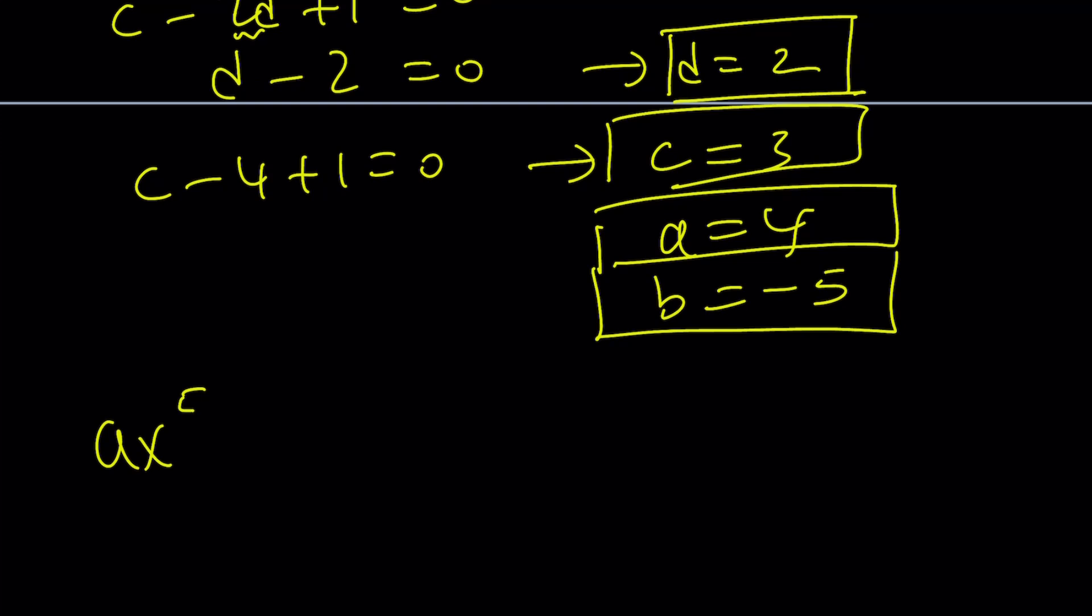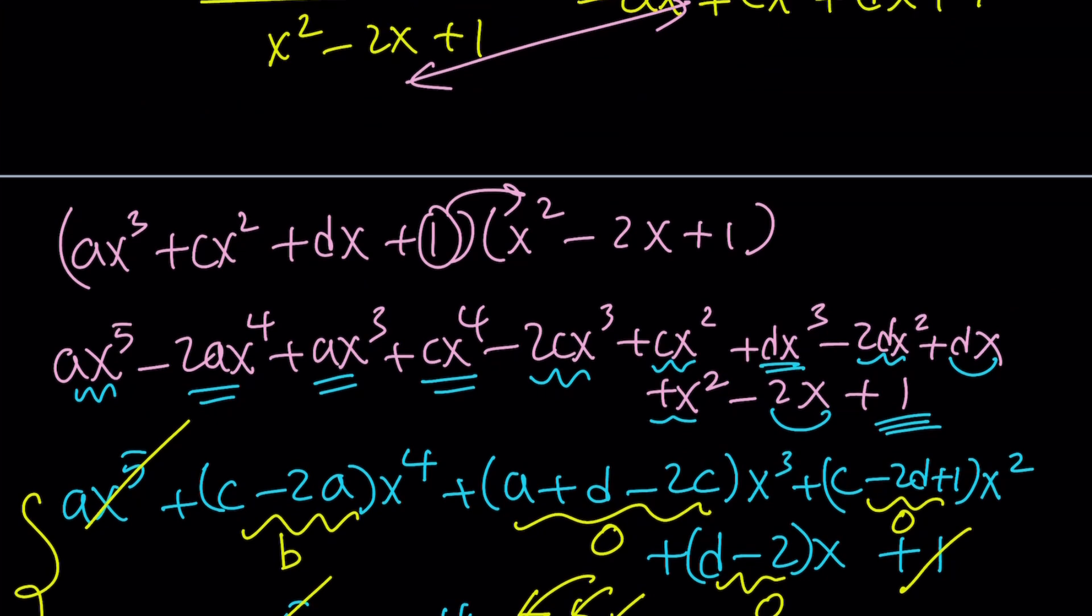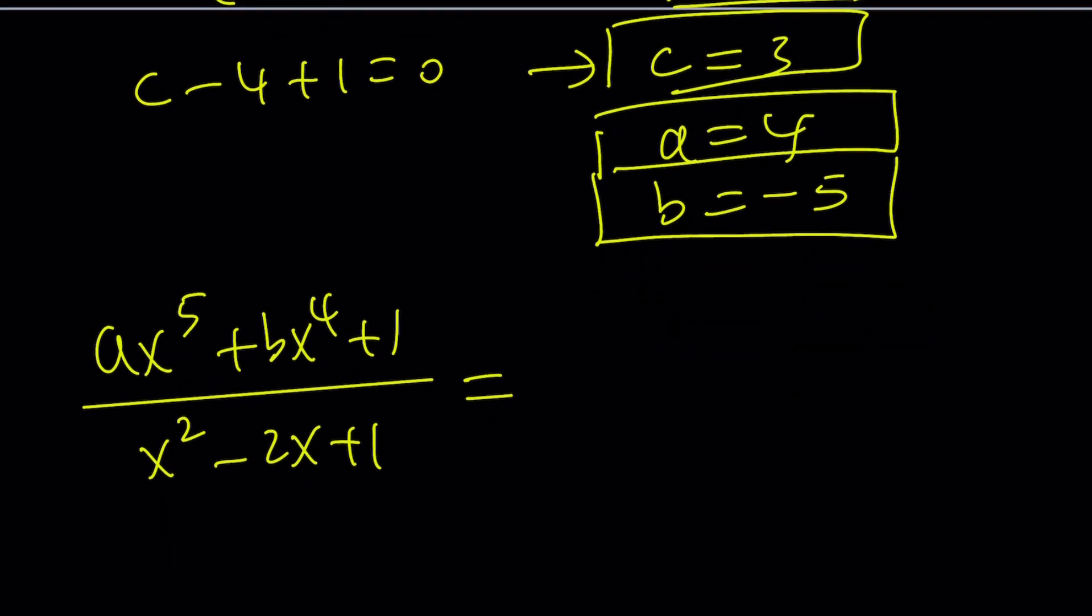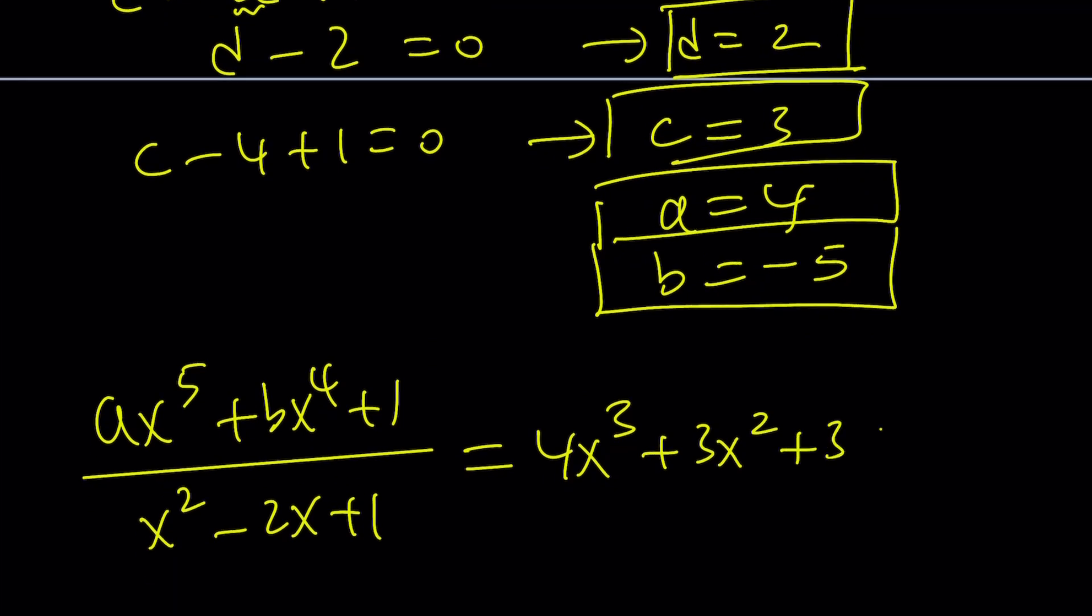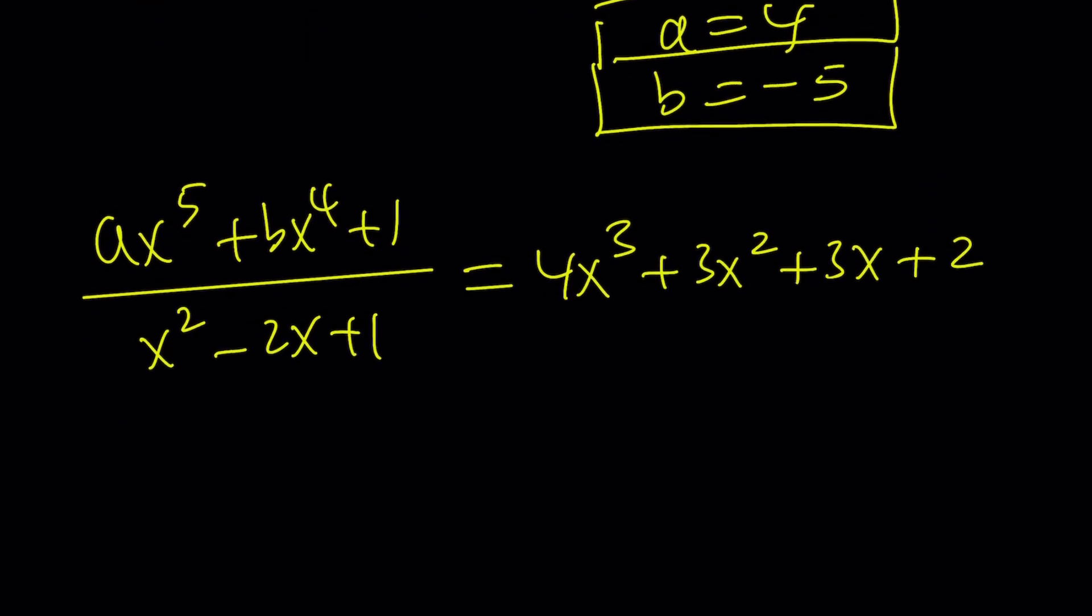Let's go ahead and simplify this expression. So I have ax to the 5th plus bx to the 4th plus 1 divided by x squared minus 2x plus 1 is equal to 4x cubed plus 3x squared plus 3x plus 2. That is the answer. And we're pretty much done. But let's go ahead and replace the a with what it is. 4x to the 5th minus 5x to the 4th plus 1 divided by this number. And that gives me this polynomial. If you don't believe that, go ahead and do the long division or use Wolfram Alpha, which is a lot easier.